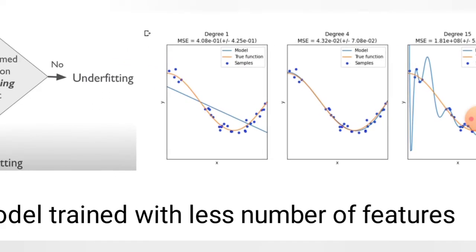In the figure, x and y axes are shown. The blue points indicate the data samples, the orange line indicates the true function, and the blue line indicates the model. In the first figure, the straight blue line and the orange curve cross over each other twice over the samples.